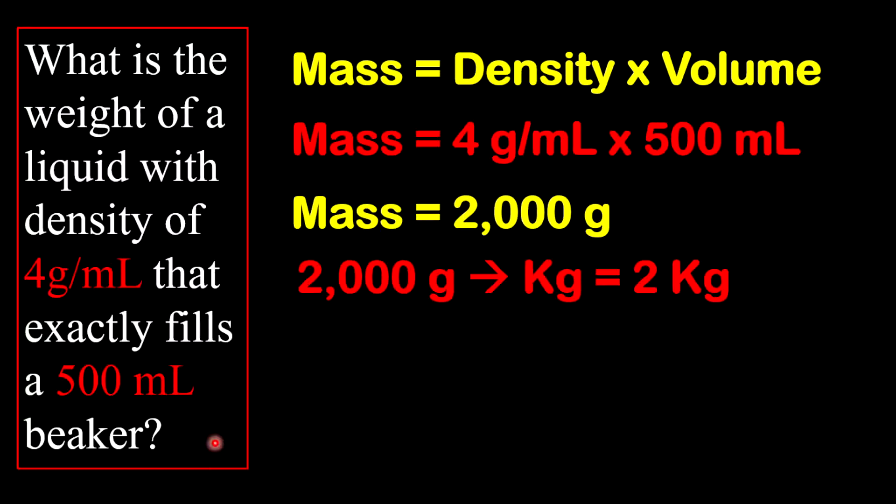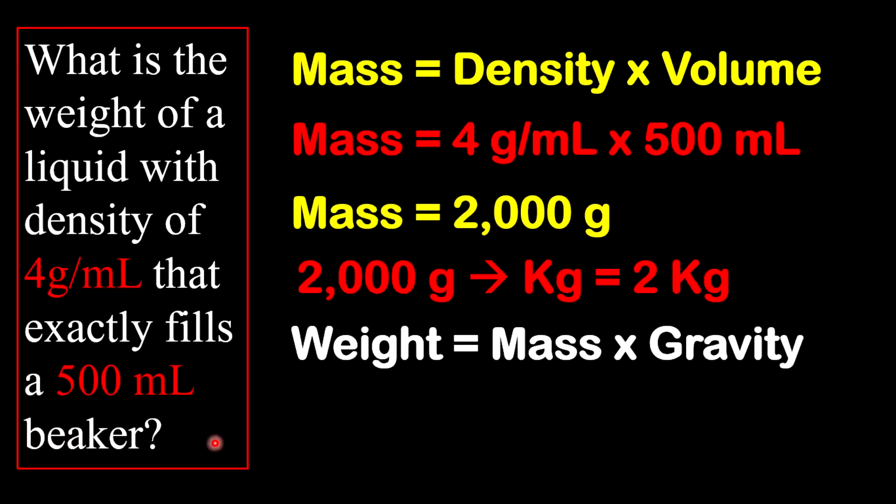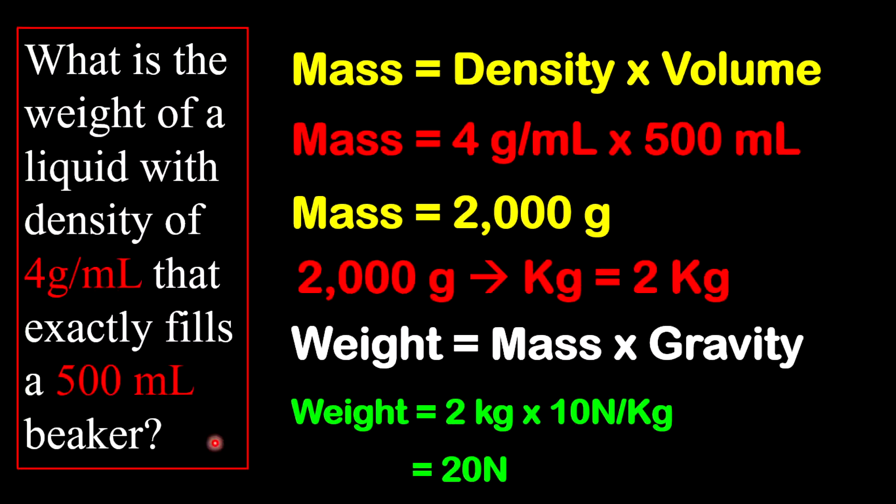And remember, to move from grams to kilograms, you will divide by 1,000. Now, once we have our mass in kilograms, we can find our weight. Because weight is equal to mass times gravity. In this example, we're going to use gravity to be 10 newtons per kilogram. So what we'll have is weight is equal to 2 kilograms from the mass, multiplied by gravity. And if gravity is not given, you can use 9.8 or you could use 10. And so therefore, the weight will be 20 newtons.